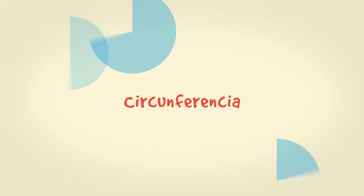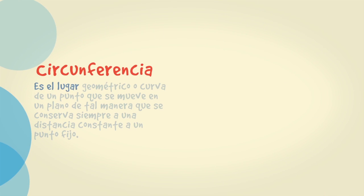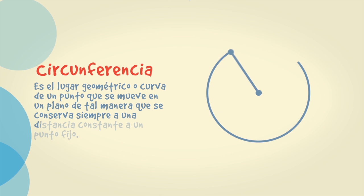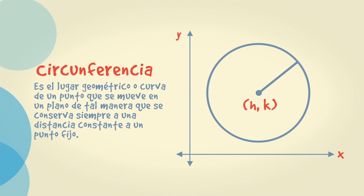La circunferencia es el lugar geométrico o curva de un punto que se mueve en un plano, de tal manera que se conserva siempre una distancia constante a un punto fijo. A la distancia constante se le llama radio, y al punto fijo, centro. La circunferencia cuyo centro es el punto H, K, y cuyo radio es la constante R, tiene por ecuación.